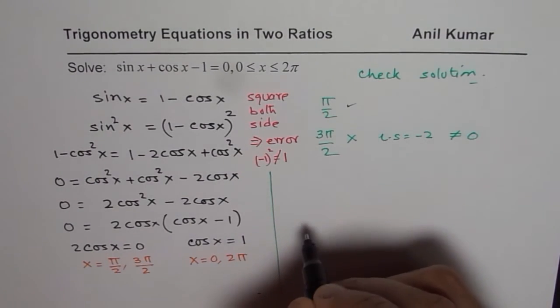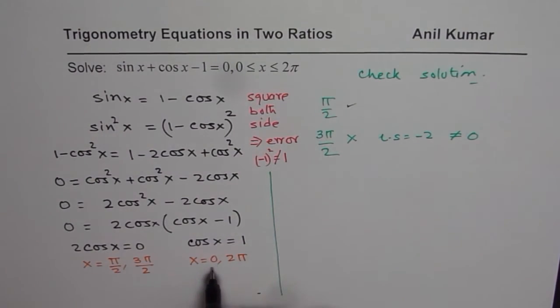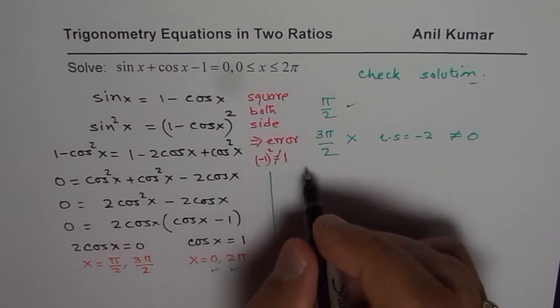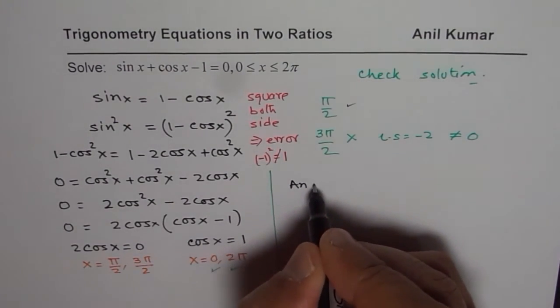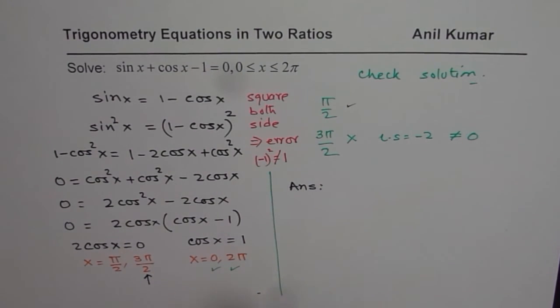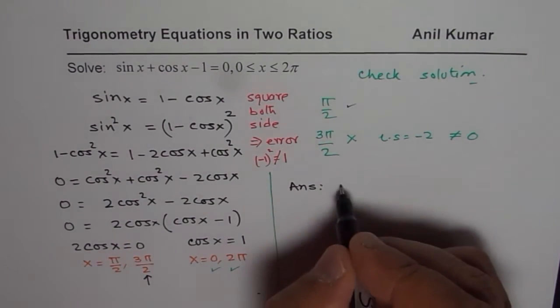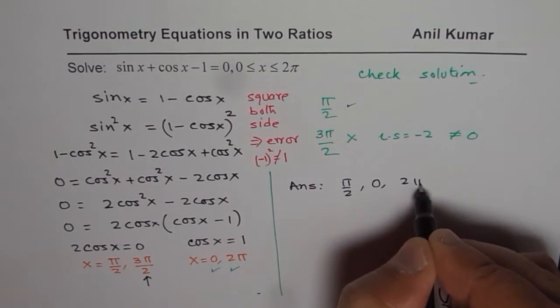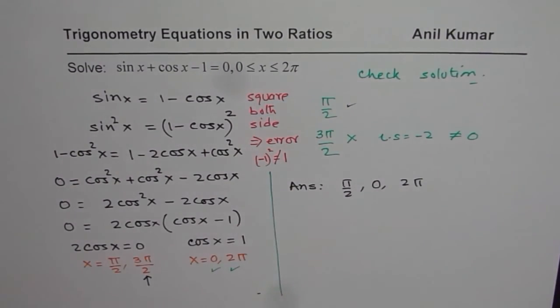So 3 pi by 2 does not work for us. Now if I use 0 and 2 pi, both these values will give us 1 for cos and 0 for sin. So they work. So after checking, we know finally our solution is what. So the answer for us will be, 3 pi by 2 is not correct. But others are fine. So we have pi by 2, 0 and 2 pi as the solution for the given equation.